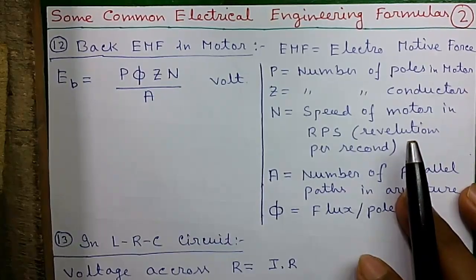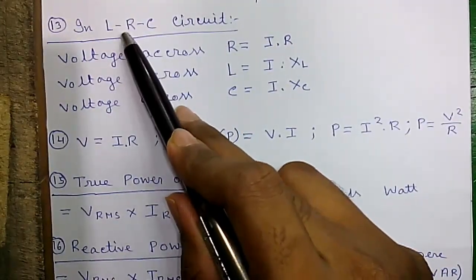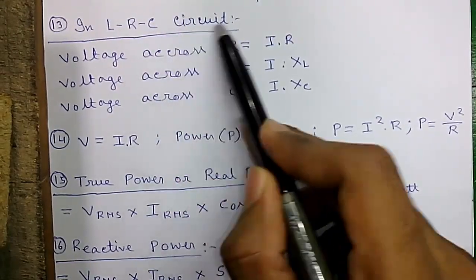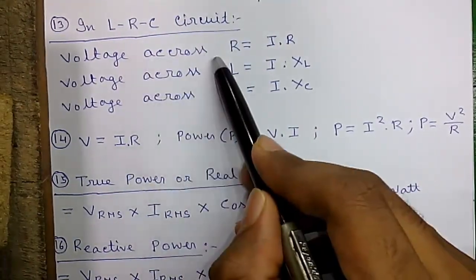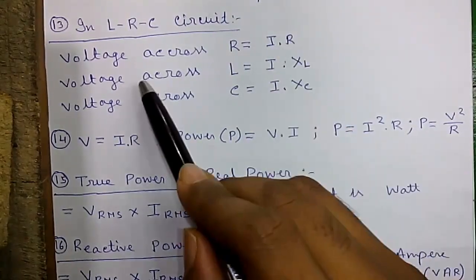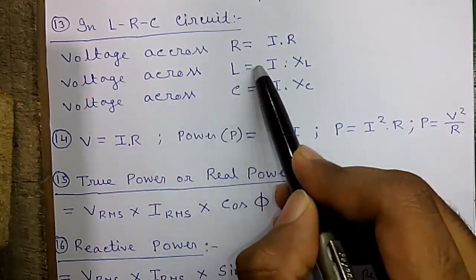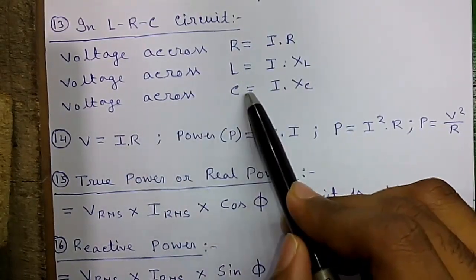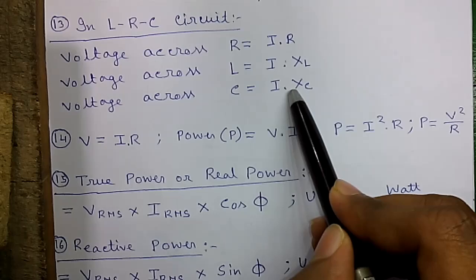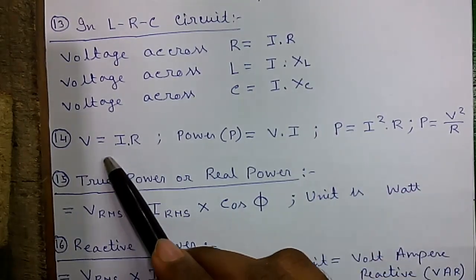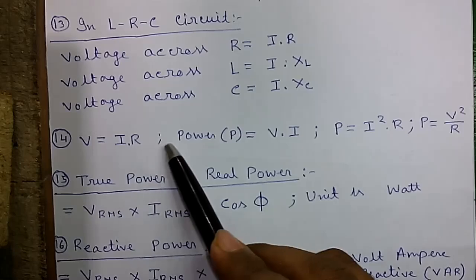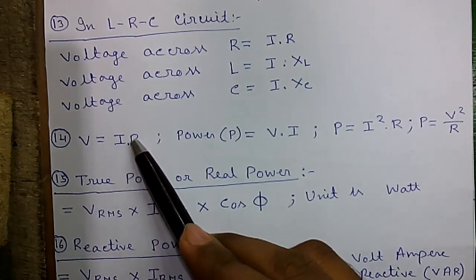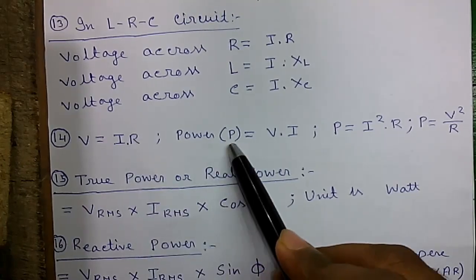Formula 13: In an LRC circuit, or inductance-resistance-capacitance circuit, the voltage across resistance is given by I into R, voltage across the inductance is given by I into XL, and voltage across the capacitance is given by I into XC. Formula number 14: V equals IR, or voltage equals current into resistance.